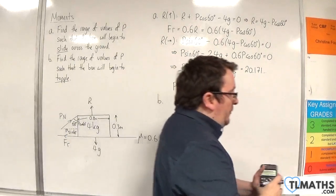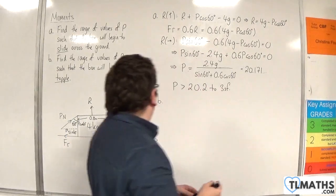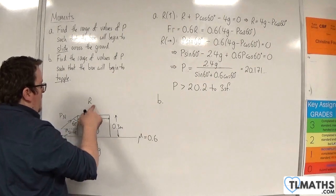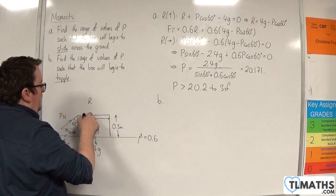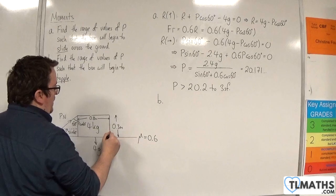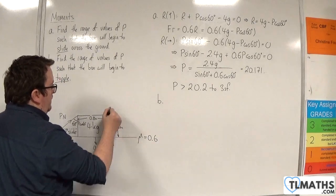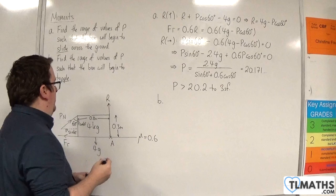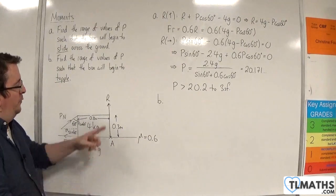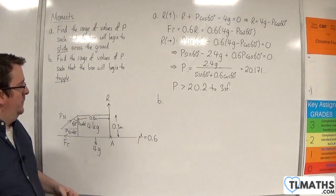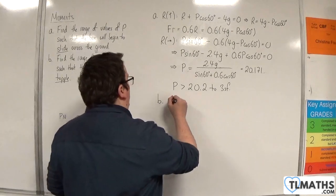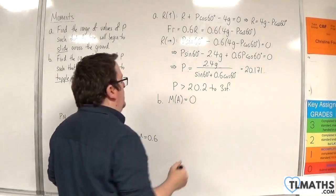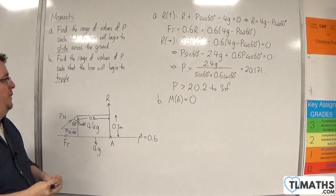Now let's see if it topples first. For part B, I'm looking at when it's toppling. It's going to topple about this corner — let's call that point A — which is the point in contact with the surface. The normal reaction force is now acting there. I'm going to take moments about point A, and if it's on the point of toppling, the net moment equals 0.